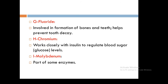Chromium works closely with insulin to regulate blood sugar or glucose levels, and it is found in unrefined foods, especially liver, yeast, whole grains, nuts, and cheese. Molybdenum is part of some enzymes, and its sources include legumes, bread, grains, leafy greens, milk, and liver.